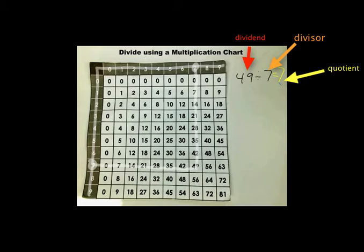Try another one. 56 divided by 8. With 56 divided by 8, 8 is our divisor, so we're going to find 8 on our multiplication chart. You follow it over until you find 56, and then you follow it up until you find the other factor, which is 7. So 56 divided by 8 equals 7. I'll try another example.